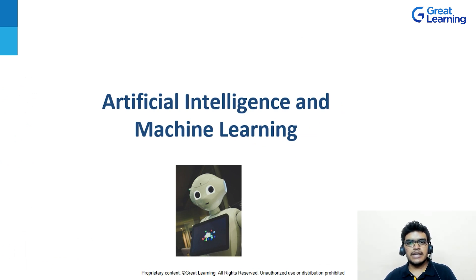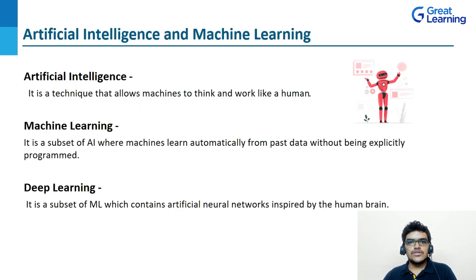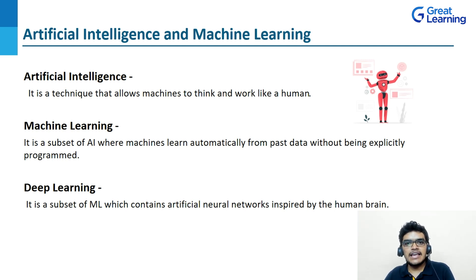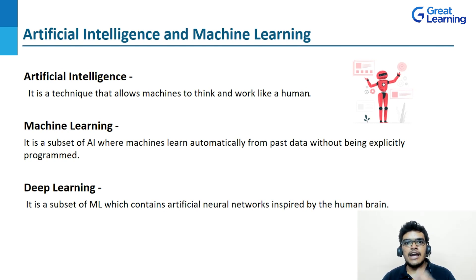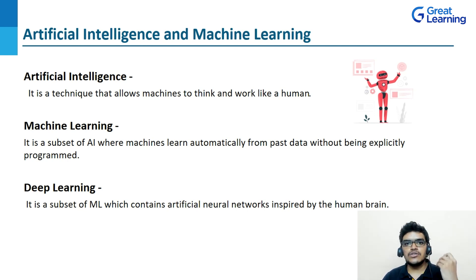Python is also used in artificial intelligence and machine learning. Artificial intelligence is a technique that allows machines to think and work like a human — for example, a self-driving car where the machine thinks like a human brain. Machine learning is a subset of AI where the machine learns from its past data; an example is facial recognition, where a system finds commonalities in a database of people and matches them to faces. Deep learning is a subset of machine learning inspired by the human brain, containing artificial neural networks. Examples of deep learning include text generation and language identification.